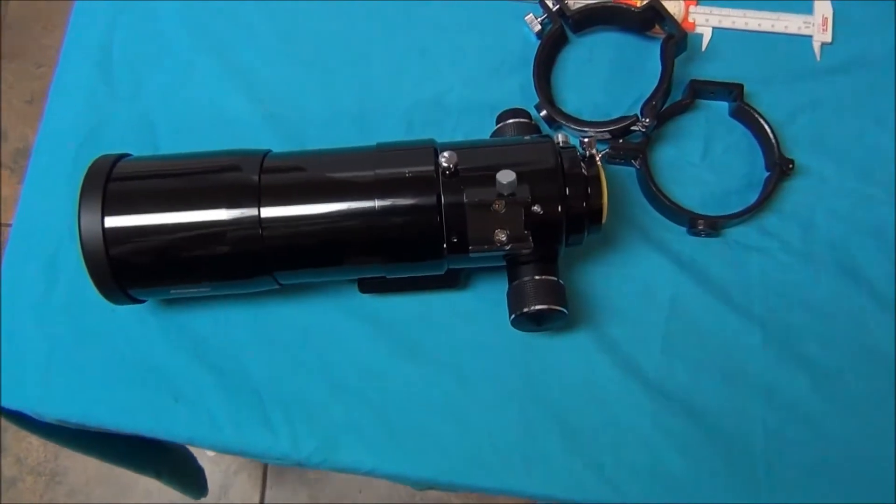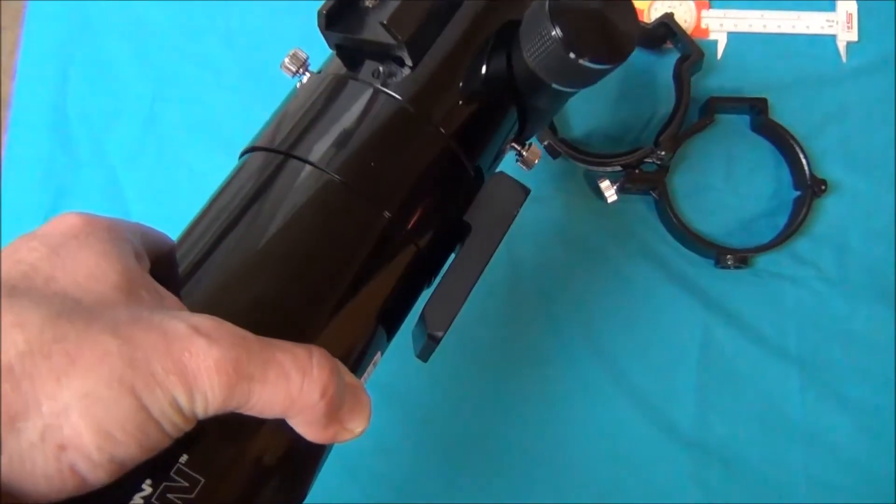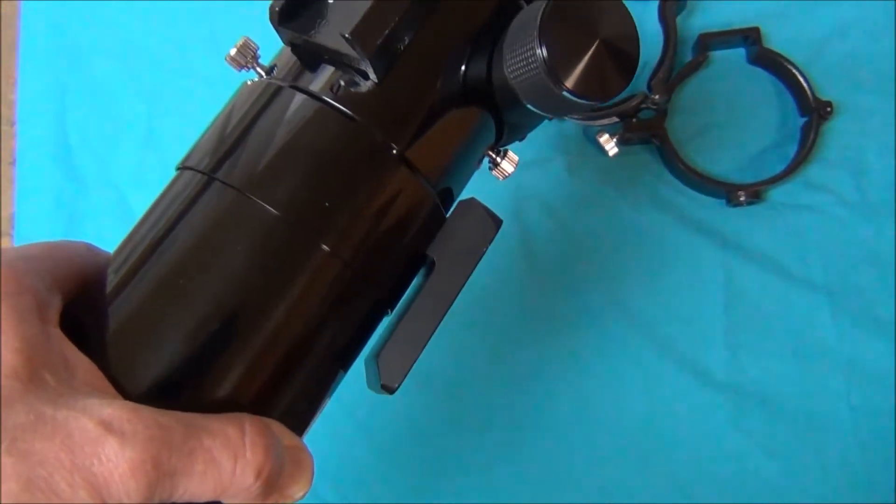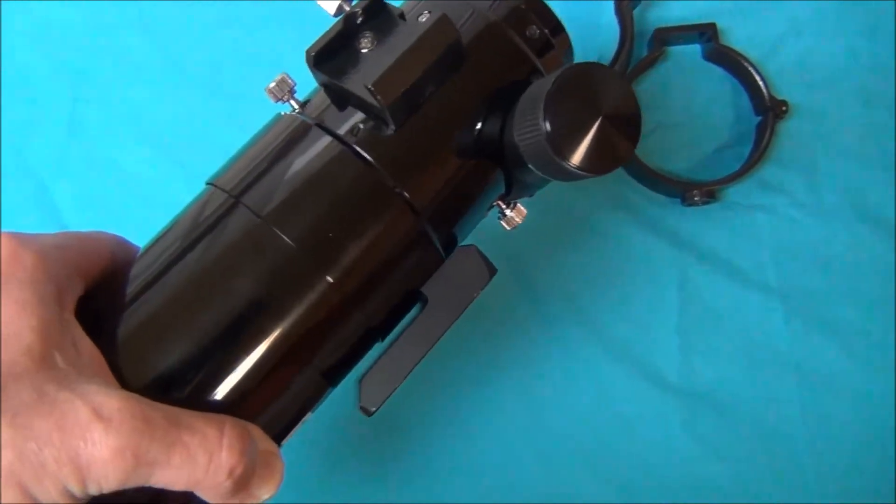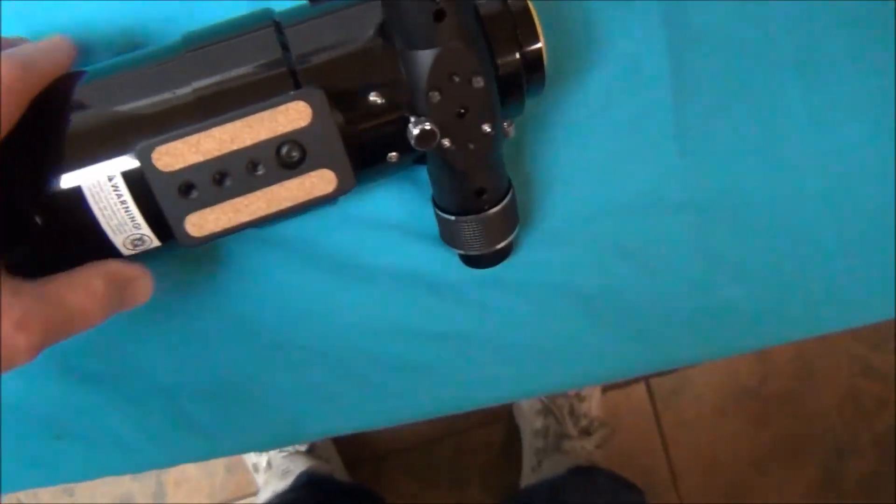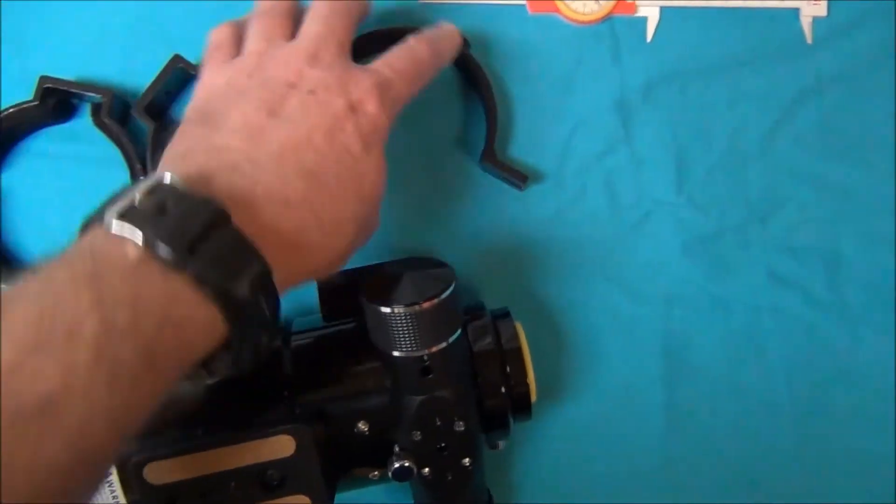I forgot to mention here on the 72 millimeter scope, it comes with this little foot mount on the end there. That's where you can mount it. I mean that's okay for visual use, but if you're going to use your scope for astrophotography, don't just use the foot mount.